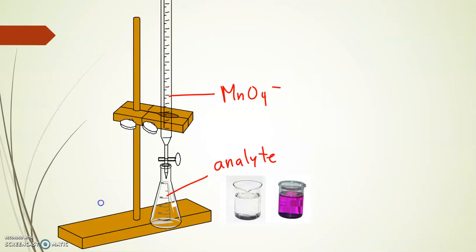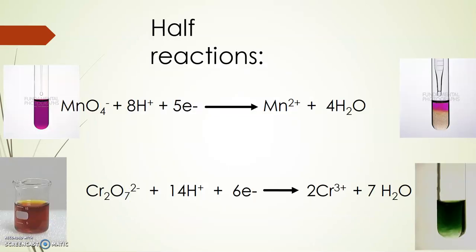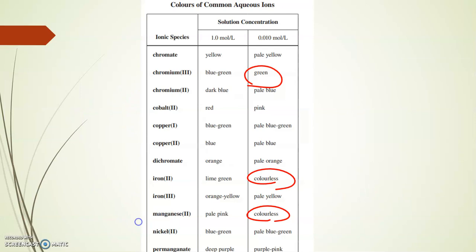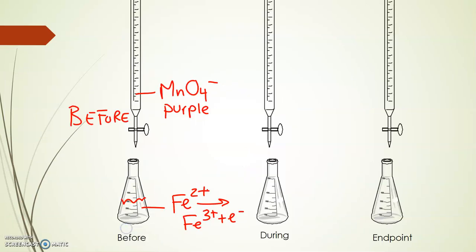MnO4-, if you recall back at our equations, requires an acidic environment to be an oxidizing agent. So that means we need to acidify. What we'll do is we will add the H+ in here because we don't want the permanganate ion to start reacting with anything in advance.